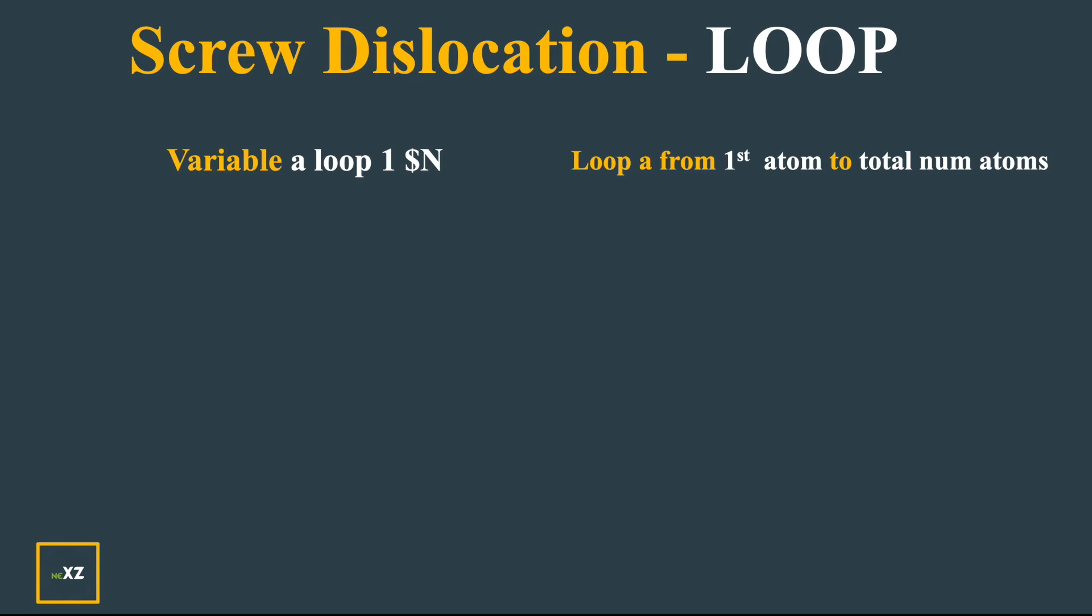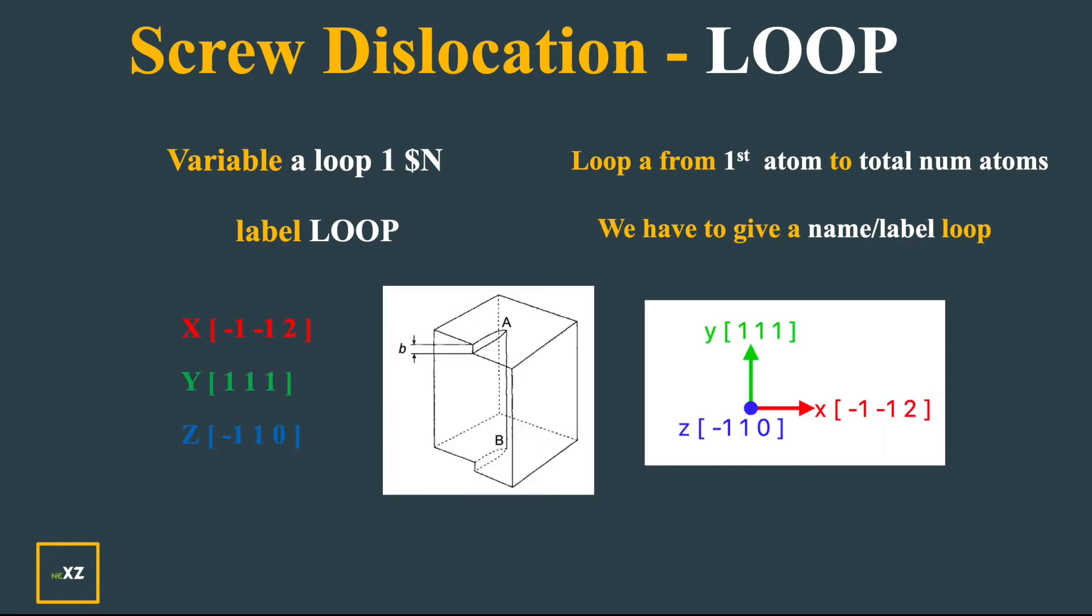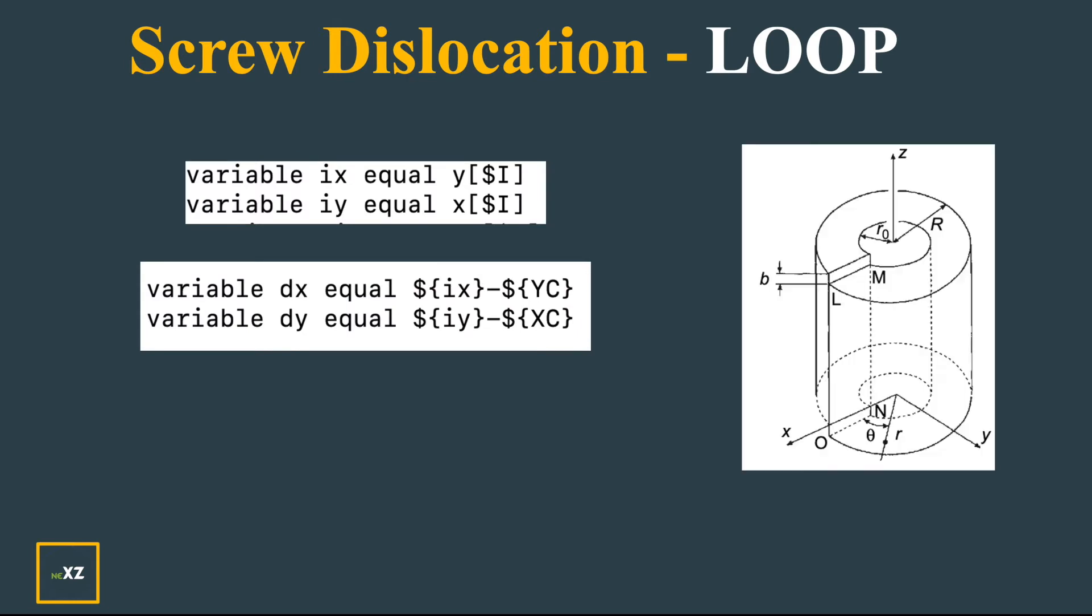The loop variable a goes from 1 to all the atoms, and the label I have named is as capital LOOP, all cap letters so we can differentiate. Now I define the dimensions. As you know, z is the dislocation line direction and also the burgers vector direction, so that it's a screw dislocation.